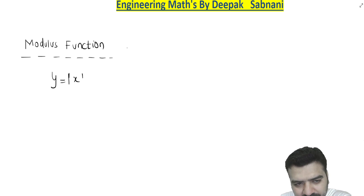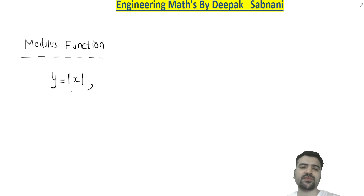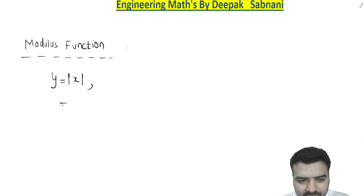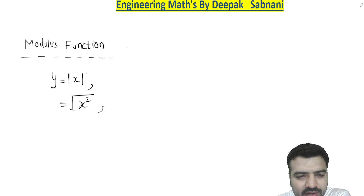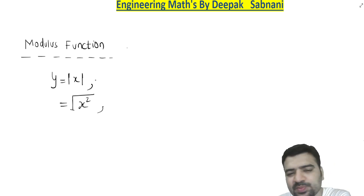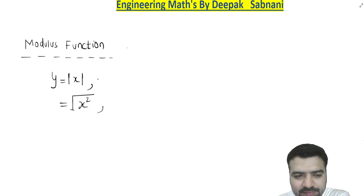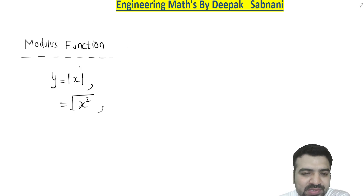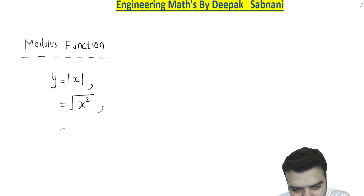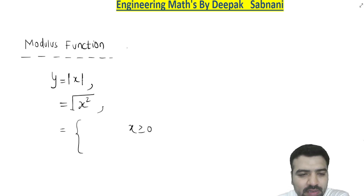So what is modulus function? It is defined as y = |x|, the absolute value of x. It can also be written as the square root of x². If you put any value of x here, the answer will always be positive — put -1, it returns 1; put -2, it returns 2; put -3, it returns 3; put +10, it returns 10. It gives you the absolute value.